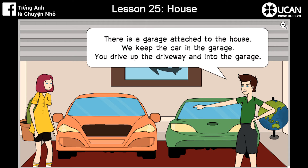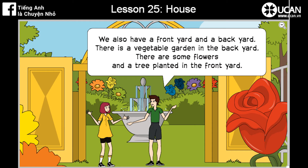There is a garage attached to the house. We keep the car in the garage. You drive up the driveway and into the garage. We also have a front yard and a backyard. There is a vegetable garden in the backyard. There are some flowers and a tree planted in the front yard.